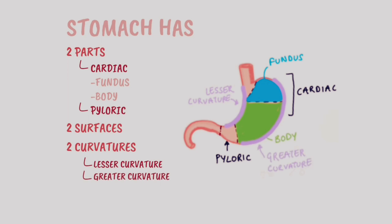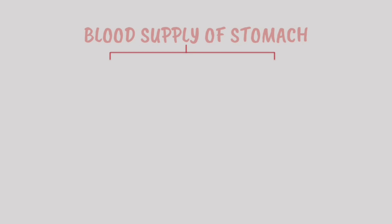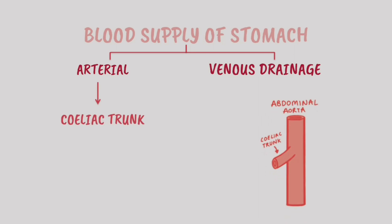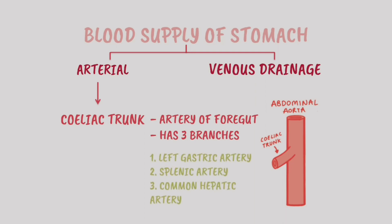We'll study the blood supply of the stomach under two headings: the arterial supply and venous drainage. The arterial supply of the stomach is by the celiac trunk. The celiac trunk is an artery of the foregut that supplies the stomach and has three branches: the left gastric artery, splenic artery, and common hepatic artery.